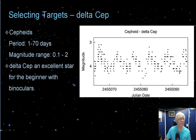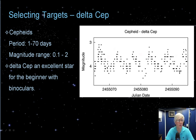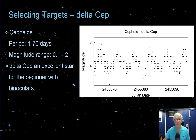Let me show you a few light curve graphs — a small selection of variable star light curves. Delta Cephei was the prototype for Cepheid variable stars. Cepheids have short periods and an obvious magnitude range, and many are available for viewing just using binoculars. It's a great beginner star to start out with — Delta Cephei in particular or Cepheid variables in general.